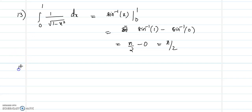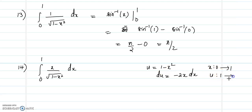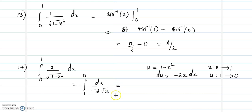Question number 14: we need to evaluate the integral from 0 to 1 of x/√(1-x²) dx. For this we will use the substitution u = 1 - x². So du = -2x dx. As x varies from 0 to 1, u will vary: when x = 0, u = 1 and when x = 1, u = 0. This gives the integral from 1 to 0.